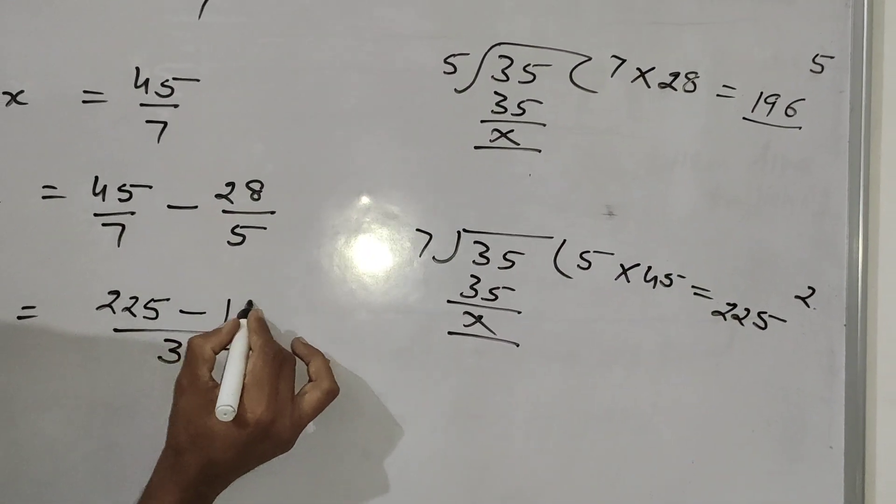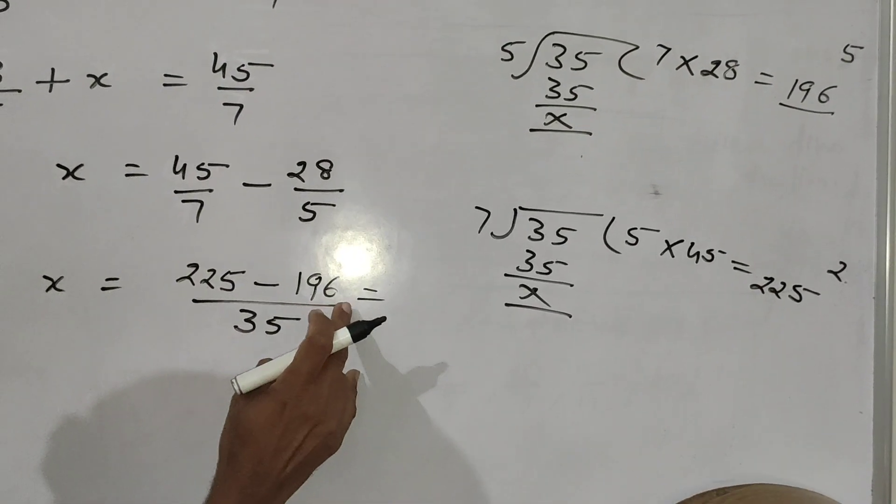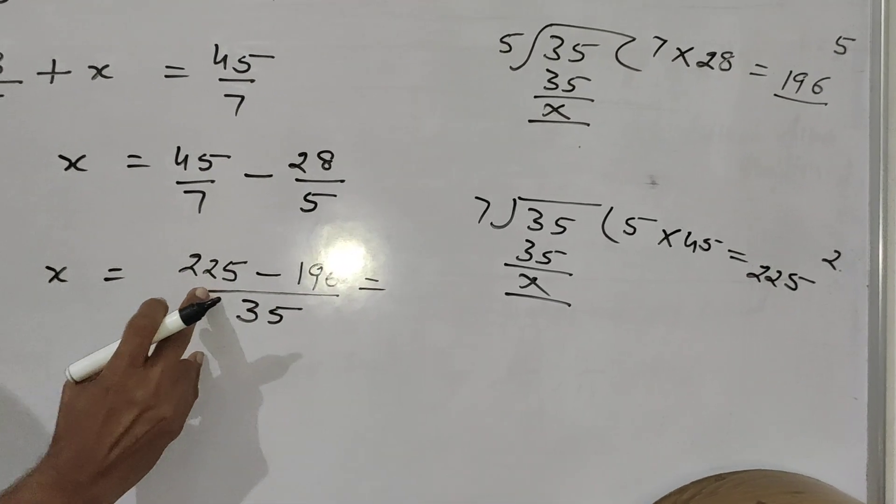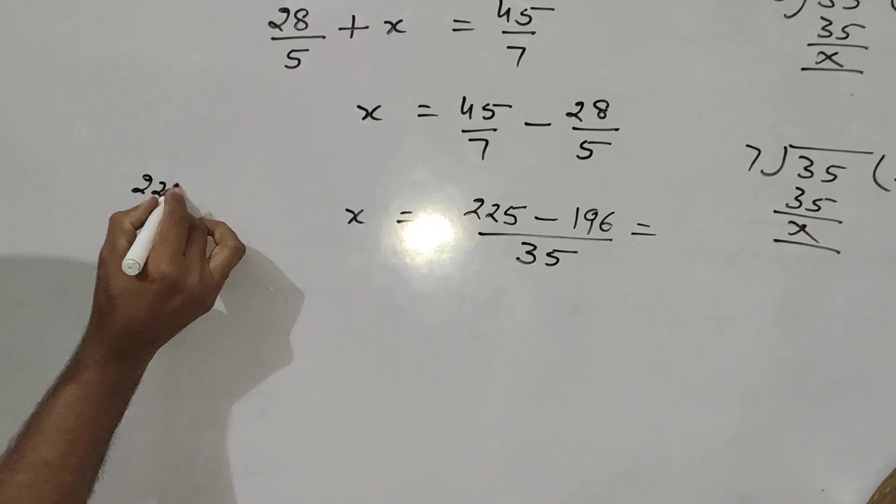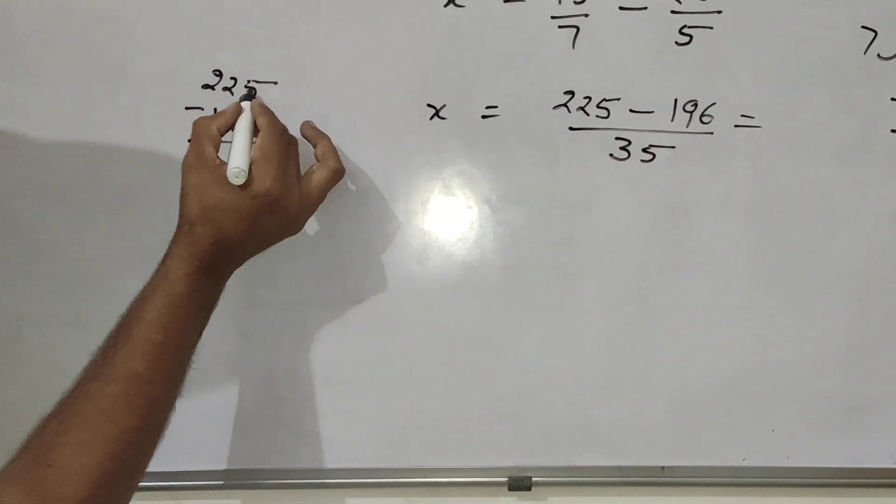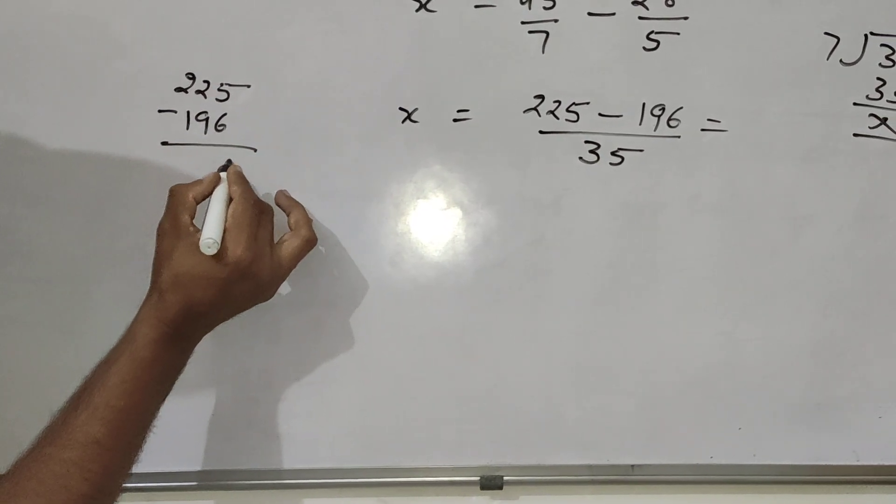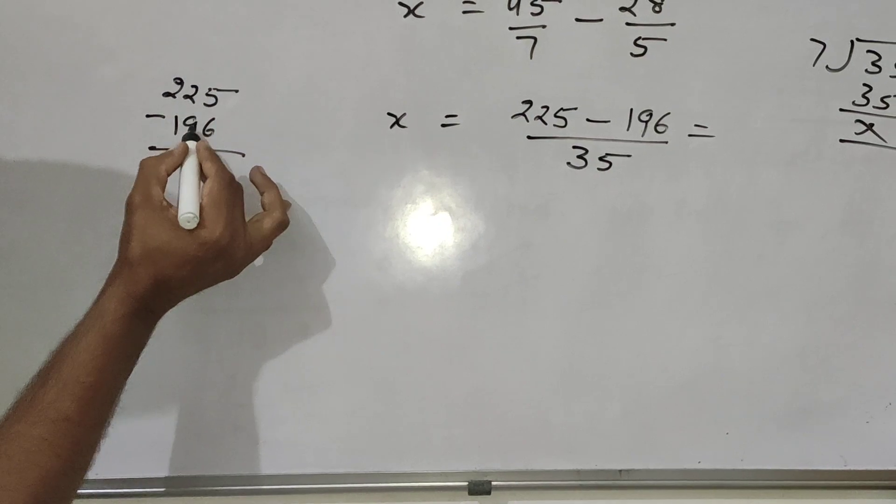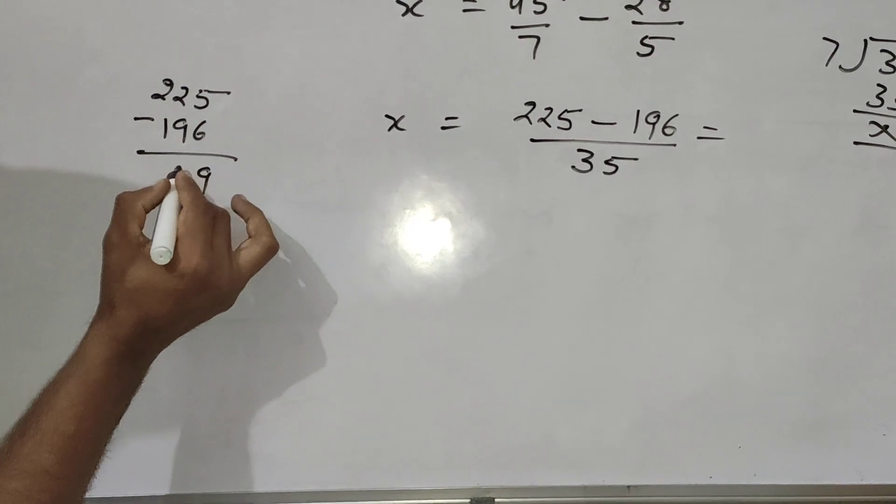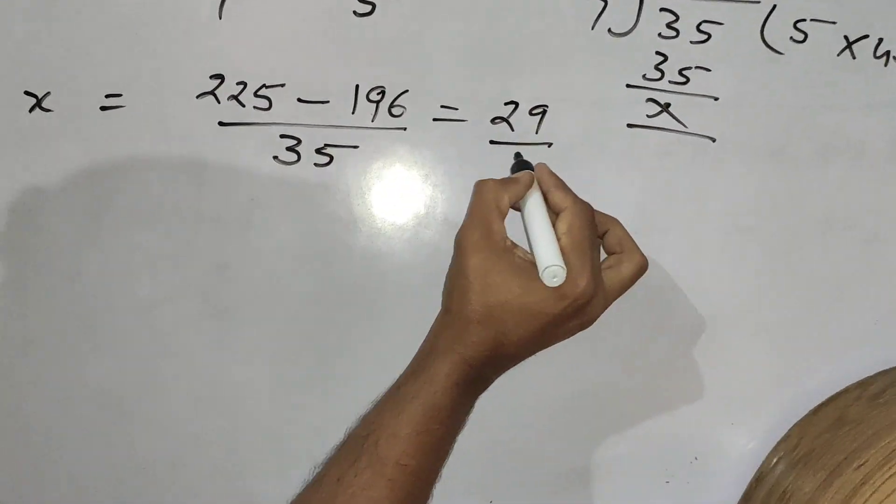Then 196. Now, subtract 196 from 225. 225 minus 196. Minus 15. 15 minus 6, 9. 11 minus 9, 2. So here, 29 by 35.